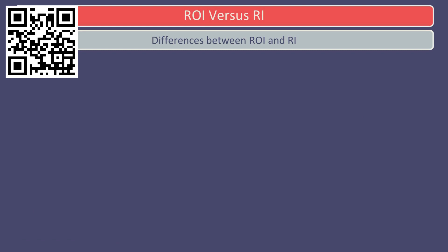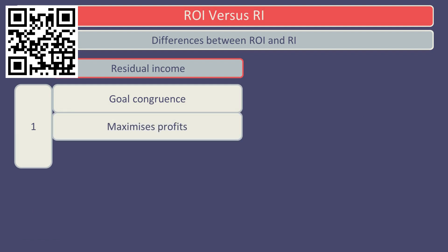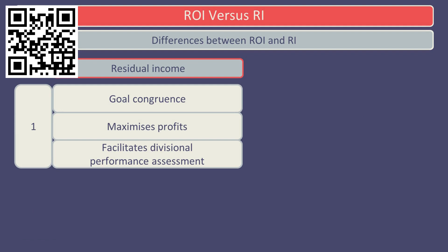These differences between return on investment and residual income should be appreciated. Ultimately, both methods use similar information in their calculations. As is evident in the above examples, residual income could be viewed as the superior method of investment appraisal, as given that the calculation is linked to the cost of capital, goal congruence should be achieved. Goal congruence avoids dysfunctional behaviour, which maximises company profits and facilitates divisional performance assessment.